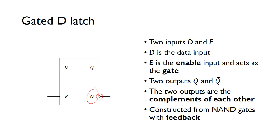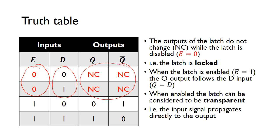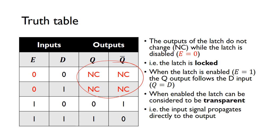We can actually create a D-latch from NAND gates using the concept of feedback. Looking at the truth table for the D-latch: when it's disabled — when the E input is 0 — it doesn't matter what D is, whether 0 or 1, there is no change. NC means no change. So as long as the enable bit is 0, there's no change in the output — essentially, the latch is locked.